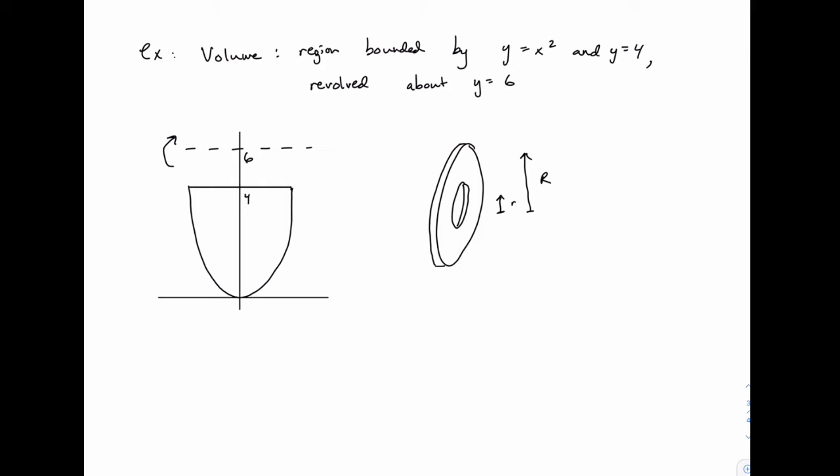In both cases, remember that the radius is just the distance between the center of rotation and the edge. Now we're told that this is revolved around the line y equals 6. So the center is just y equals 6.